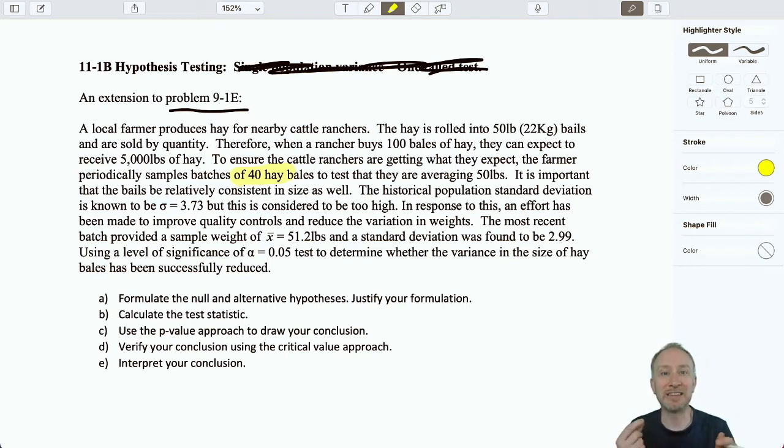It's important that the bales be relatively consistent in size as well. So this is where it deviates a little bit from our problem in module nine, because now we're talking about consistency, which is the variance. The historical population standard deviation is known to be 3.73, but this is considered to be too high. That's a bit of a clue as to what we might be doing. In response to this, an effort has been made to improve quality and reduce the variation in those weights. So we want it to be more consistent. The most recent batch had a sample weight of 51.2 and a standard deviation of 2.9. We'll use a 0.05 level of significance to determine whether the variance in the size of hay bale has been successfully reduced.